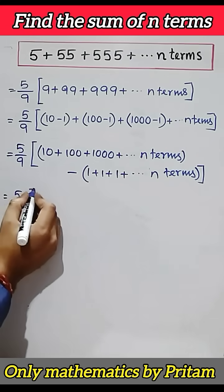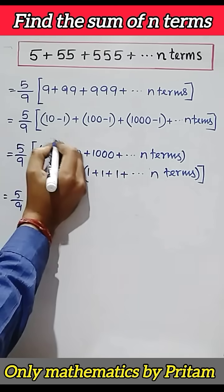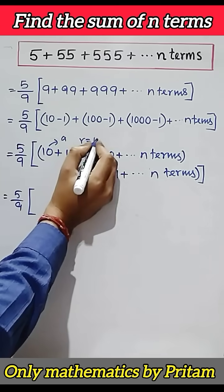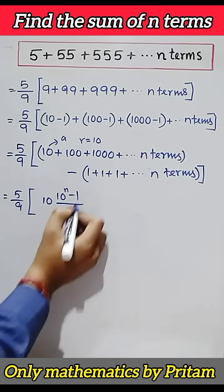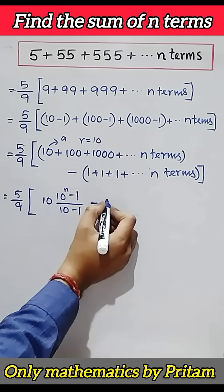Now see one thing: this series 10, hundred, thousand is a GP series. a is 10, r is also 10. So summation formula: a into r to the power n minus 1 by r minus 1. Number of 1 is n.